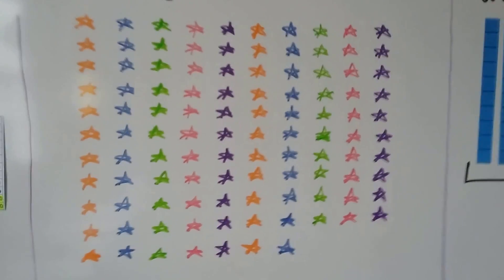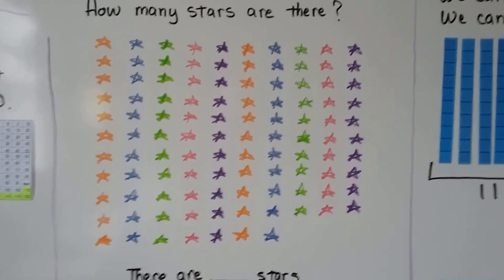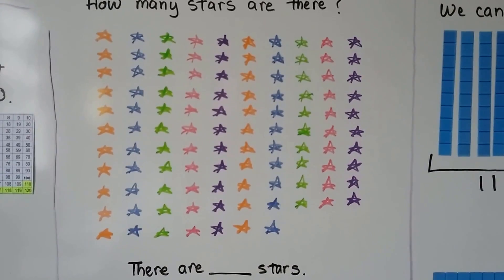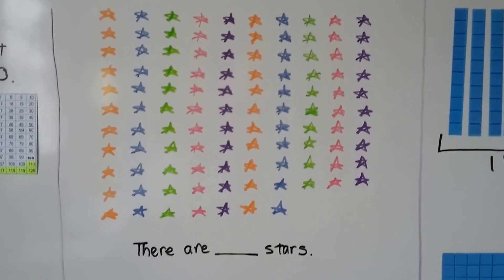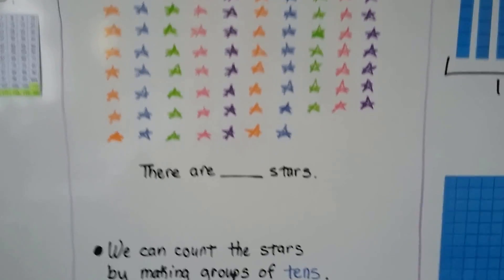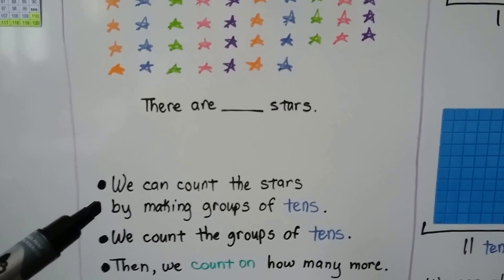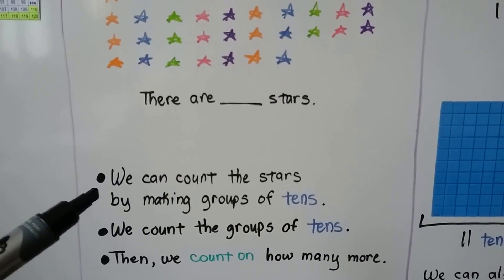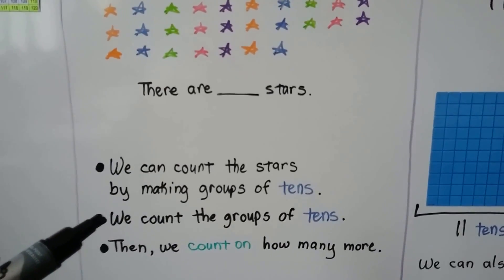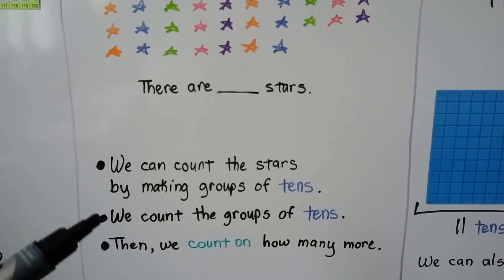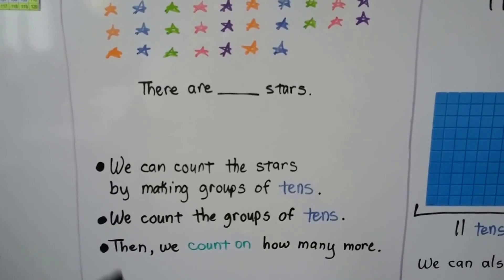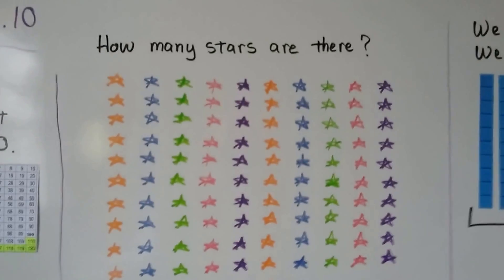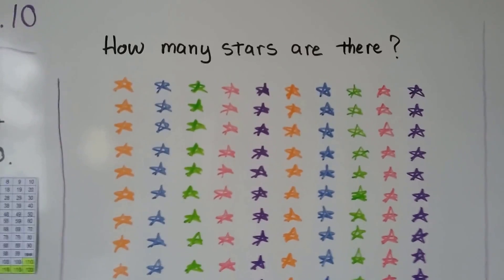Look at all the stars, all the colorful stars. How many stars are there? What we can do is we can count the stars by making groups of tens. Then we count the groups of tens, and then we count on how many more are left over. So let's find a group of 10.